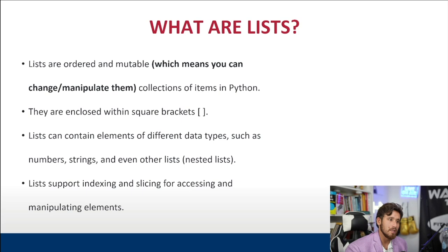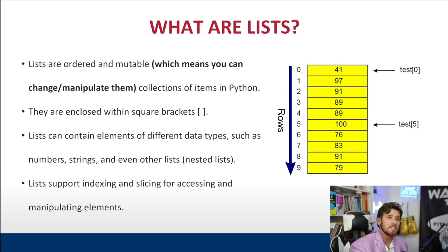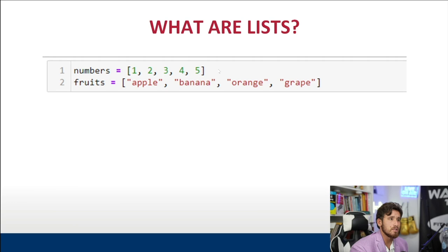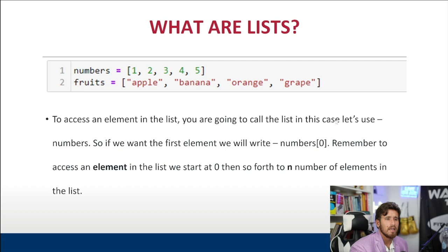Lists actually start with an index of zero, so your first element will have an index of zero and go numerically from there. For example, test at index zero will be 41, and test at index five will be 100, where 'test' is whatever your list name is. So if we have a list called 'numbers' and we want to access the first element, we write numbers[0]. Remember, to access an element in a list we start at zero.